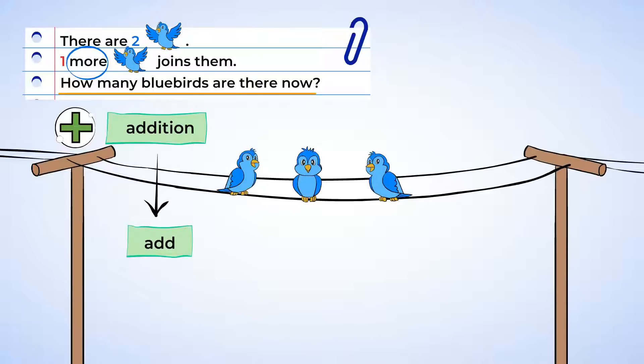So we're adding two plus one. And we can write that like this. This equation reads two plus one equals something. The two is for the first two bluebirds. The plus means that we're adding. And the one is for the new bird that joined.